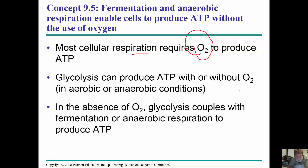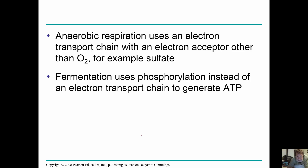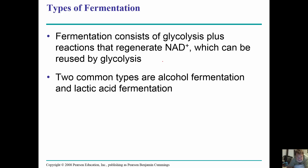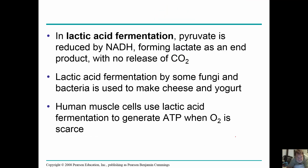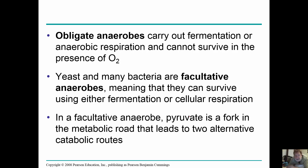Glycolysis can produce ATP with or without oxygen in aerobic or anaerobic conditions. In the absence of oxygen, glycolysis couples with fermentation or anaerobic respiration to produce ATP, but you do not get as much. In anaerobic respiration, you use an electron transport chain with an electron acceptor other than oxygen — for example, sulfate can be used as a terminal electron acceptor. Alcohol fermentation and lactate fermentation also occur in animal systems. In obligate anaerobes, fermentation occurs only without oxygen, and oxygen is actually a toxin to them.